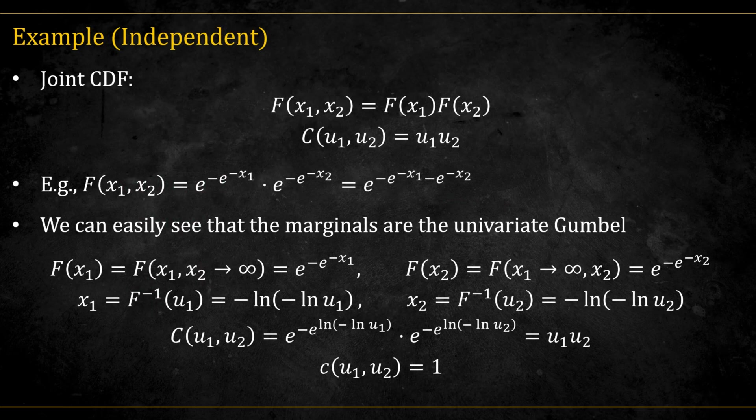Another important example is that of independent random variables. When the variables are independent, the joint CDF is equal to the product of the marginals, meaning that the copula function equals simply u1 times u2.